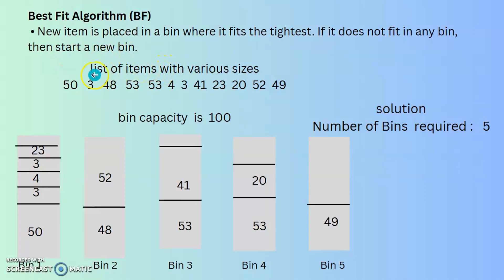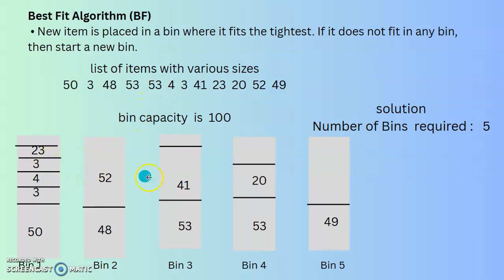According to this algorithm, take the first item of size 50 and put it in bin 1. Next item 3 — it can be placed in the first bin, so place it there. Item 48 cannot be placed in bin 1, so go for bin 2. Item 53 cannot be placed in bins 1 or 2, so go for bin 3. The next 53 cannot be placed in the first three bins, so go for bin 4. Items 4 and 3 can both be placed in bin 1.